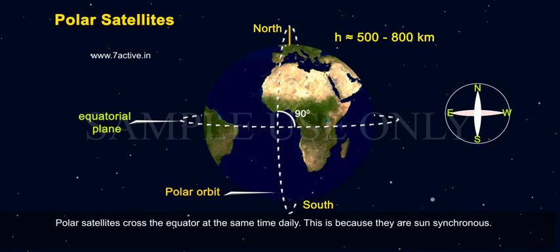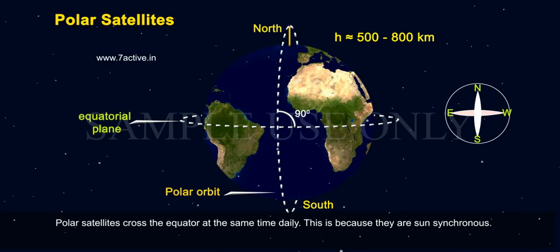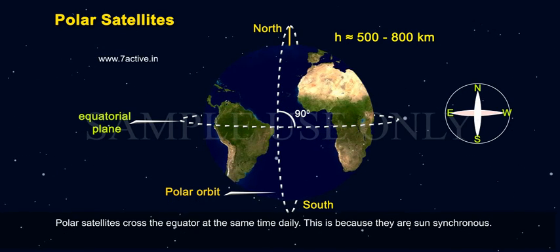Polar satellites cross the equator at the same time daily. This is because they are sun-synchronous.